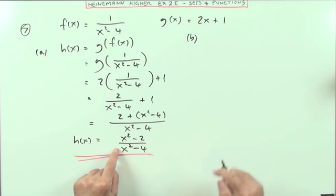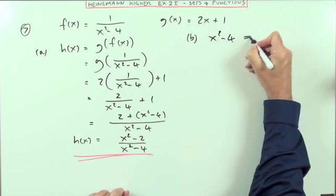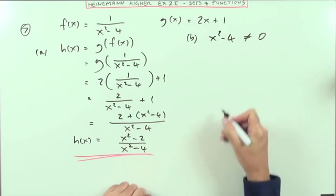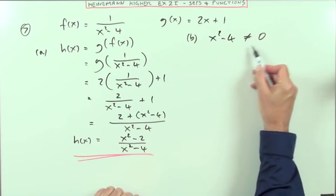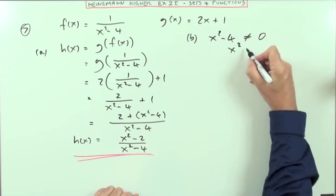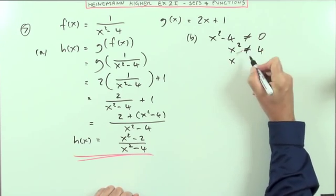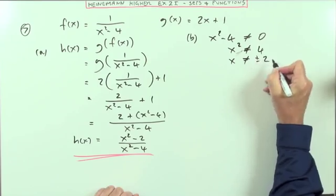So in this case, I can't have the denominator equaling 0. There's a couple of ways of solving that. I could factorise it and then take the separate parts, or since it's just one term with x, I can just swap sides. So x squared shouldn't equal 4, so x shouldn't equal plus or minus 2.